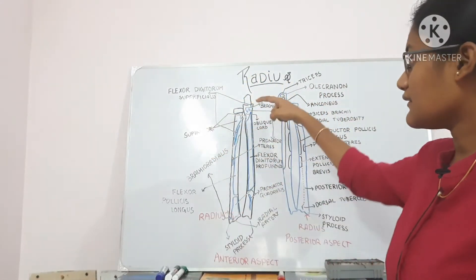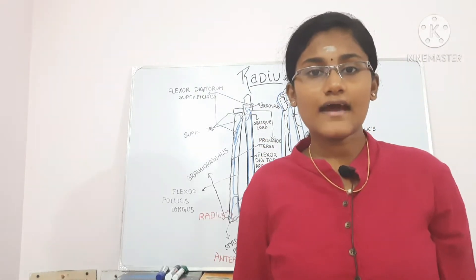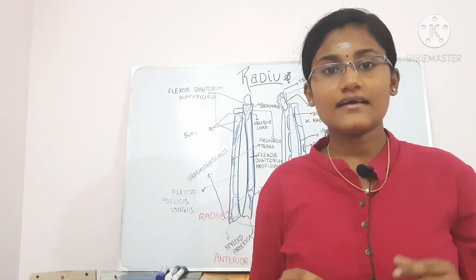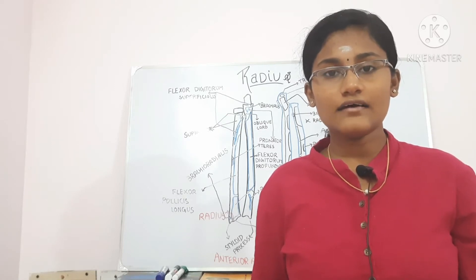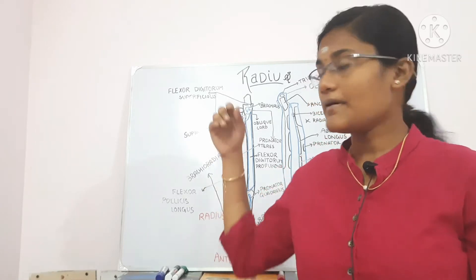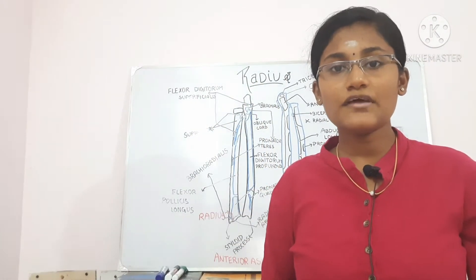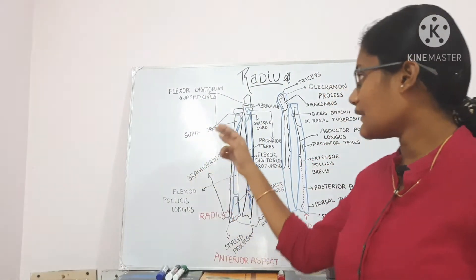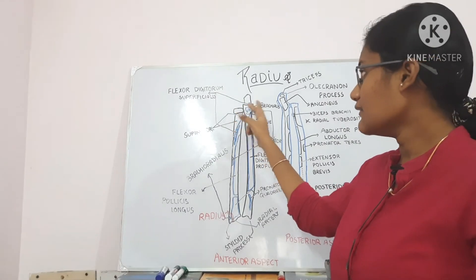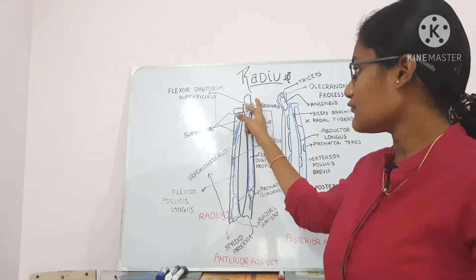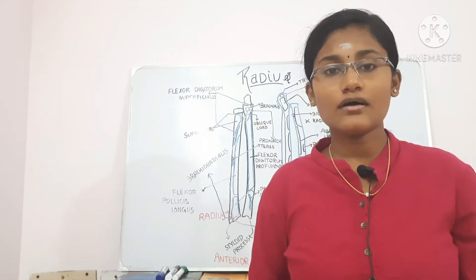Now let's talk about the upper end. The upper end has three main features: the head, neck, and radial tuberosity. The head is disc-shaped and is covered by hyaline cartilage. The head is articular — on its upper end it articulates with the capitulum of the humerus to form the humeroradial joint, and the circumference of the head articulates with the radial notch of the ulna to form the superior radioulnar joint.